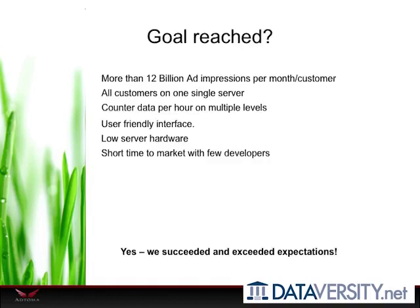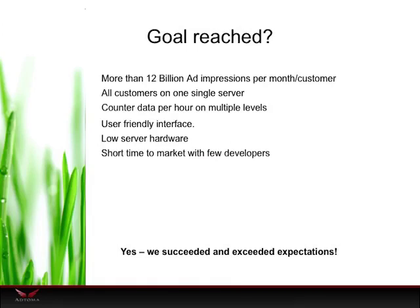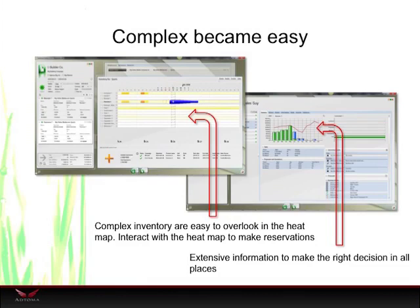Did we reach the goal? We deliver more than 12 billion ad impressions per month per customer. We can run all our customers on a single server. We store counter data per hour on multiple levels throughout the system. We have a very user-friendly interface and very low server hardware requirements. We had a short timeline to market and used very few developers — so I would say we succeeded and exceeded expectations. We implemented the heat map, and the user uses the same component to see what inventory is occupied and to make new reservations. The salesperson can use the system while talking to customers on the phone, make reservations, and put the ad online while the customer is still on the phone — and to my knowledge, no other competitor does that today.